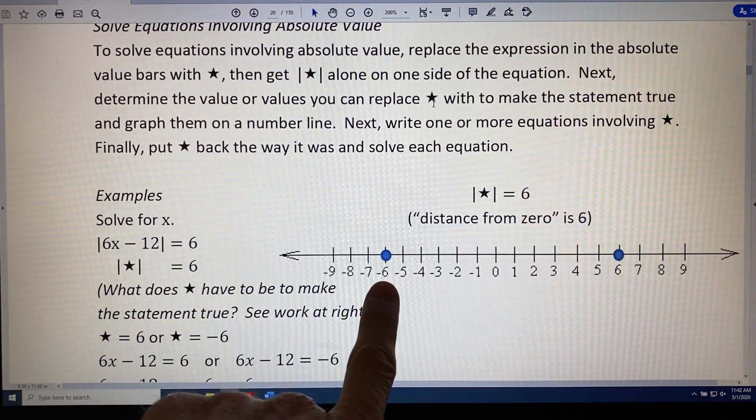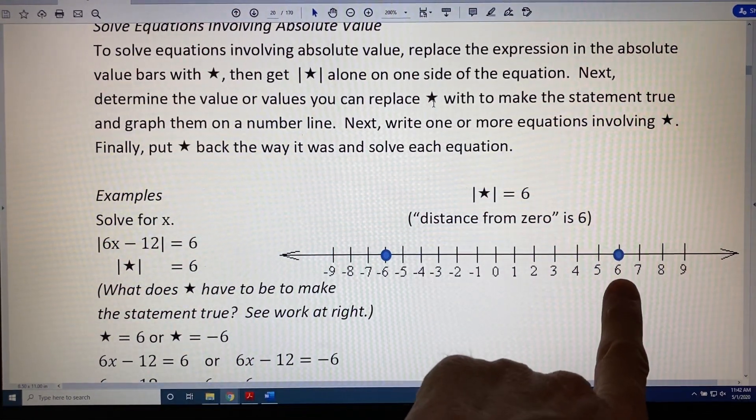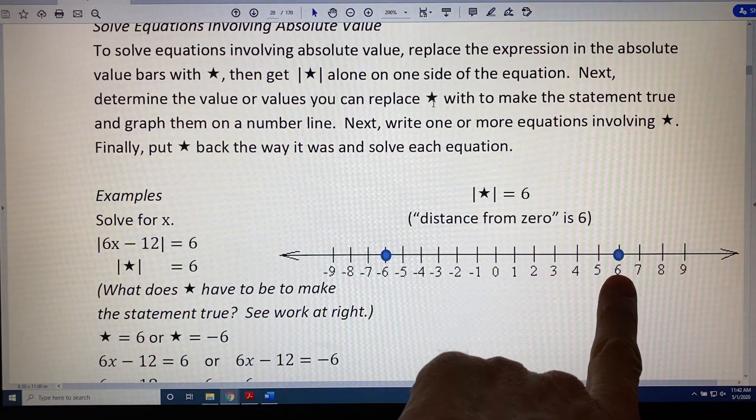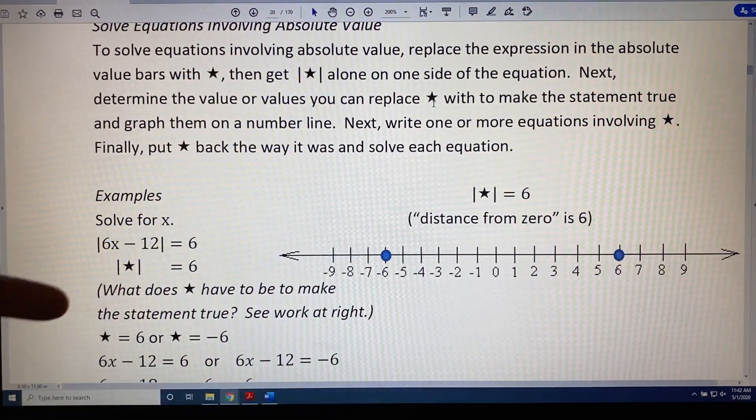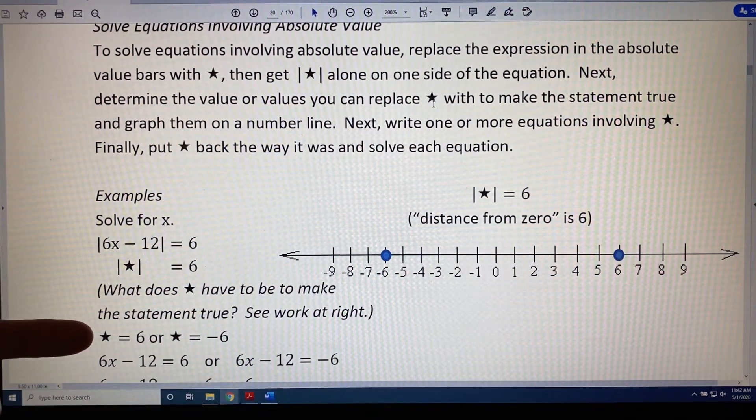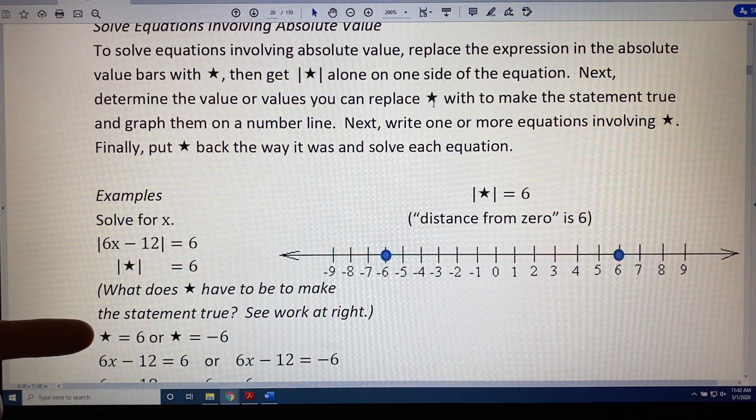So that means that the value of star, the thing inside the absolute value bars, could be 6 or negative 6. And we can write our equations: star equals 6 or star equals negative 6.